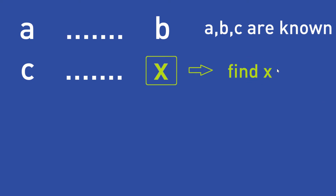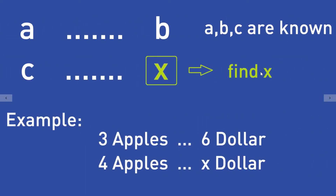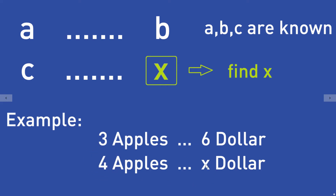I will show you an example now so you know what this should look like. 3 apples cost $6, and you want to know how much 4 apples will cost. So the value 3 is A, the value 6 is B, the value 4 is C, and this is the unknown value you want to find.